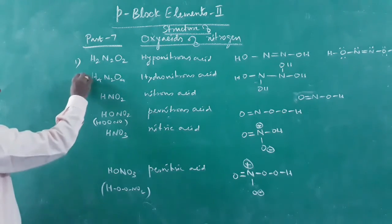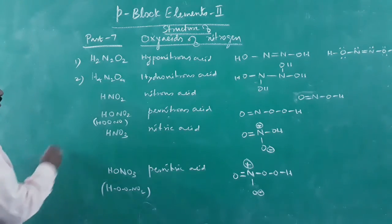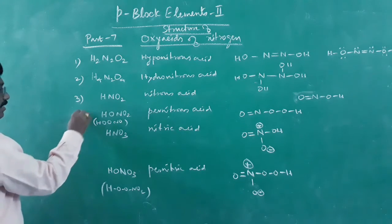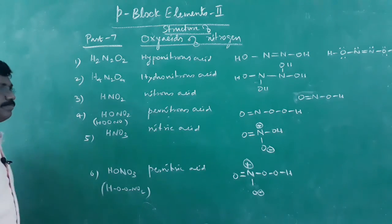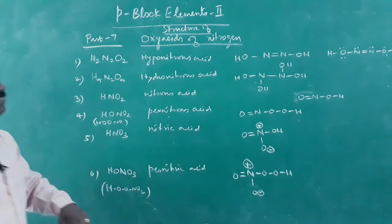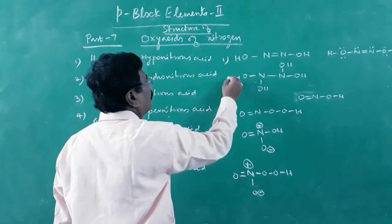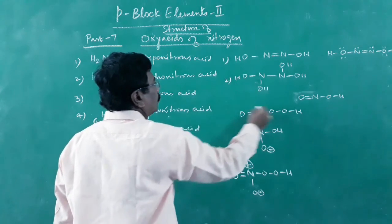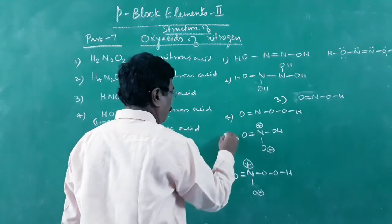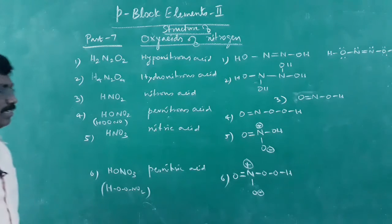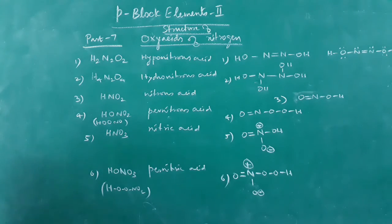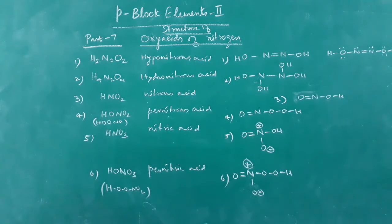So we have seen all six oxyacids: hyponitrous acid, hydronitrous acid, nitrous acid, pernitrous acid, nitric acid, and pernitric acid — easy to remember, nothing so difficult.